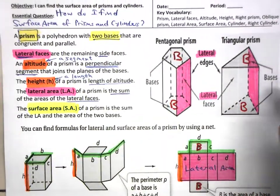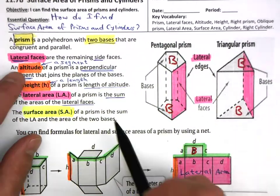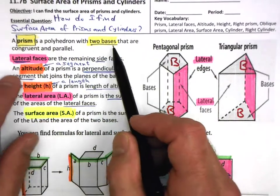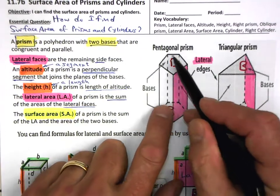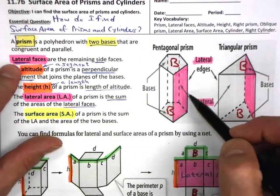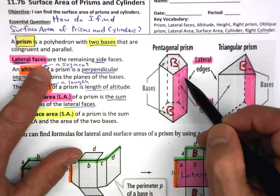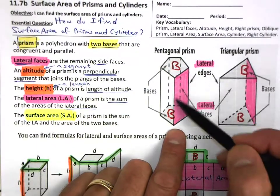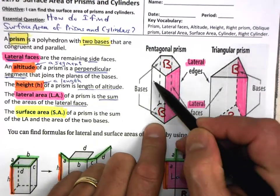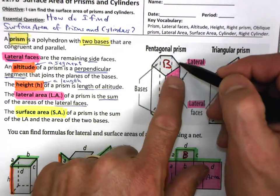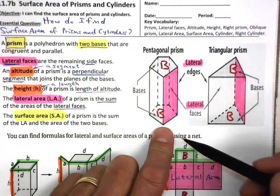Let's get some terminology here. A prism has two bases, as we just said. Lateral faces are the other faces — the remaining side faces. For example, this colored pink area is a lateral face. So is the one on the left, and the one behind, and so forth. On this triangular prism, the face on the right-hand side is also a lateral face.